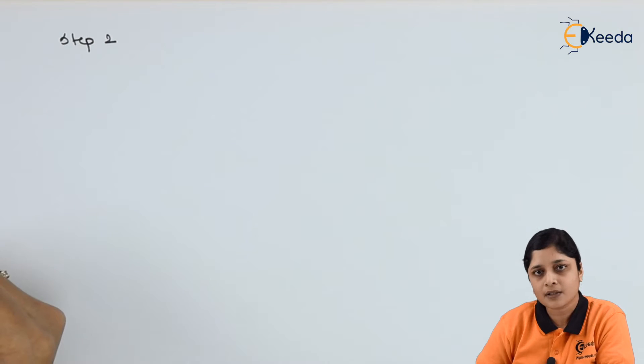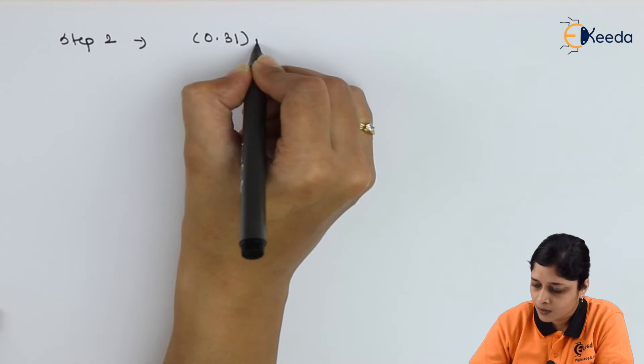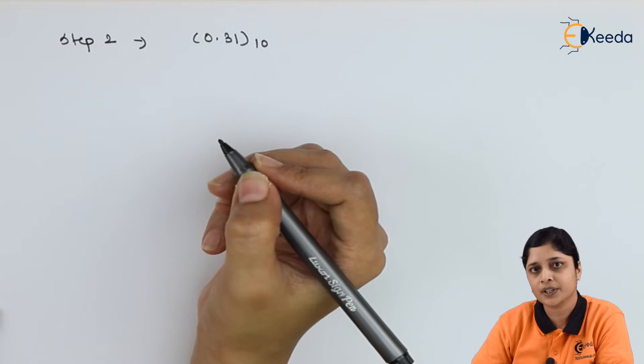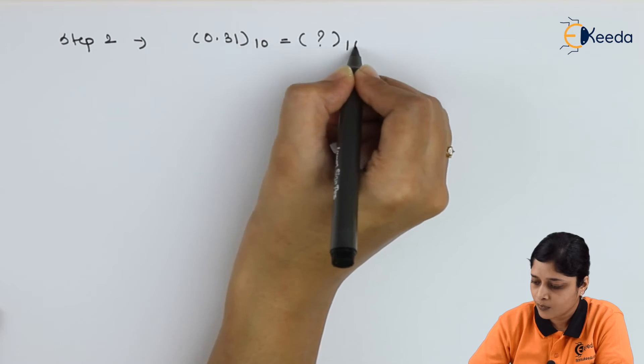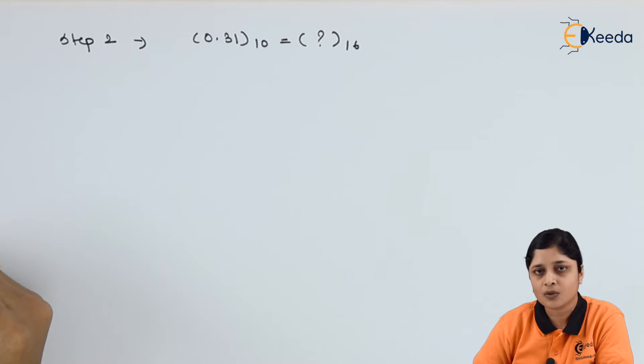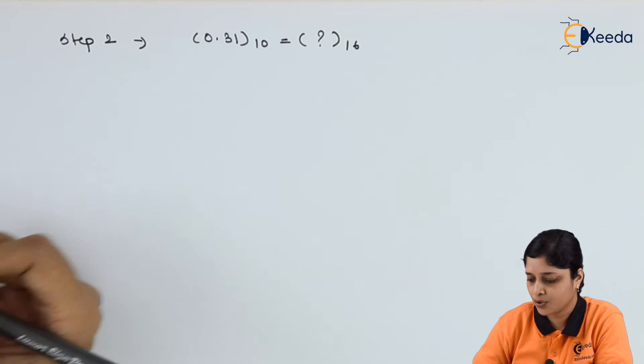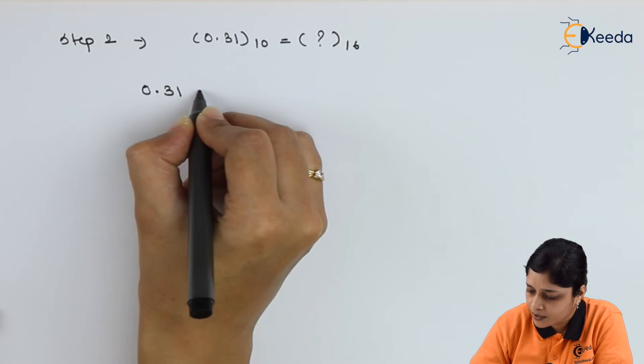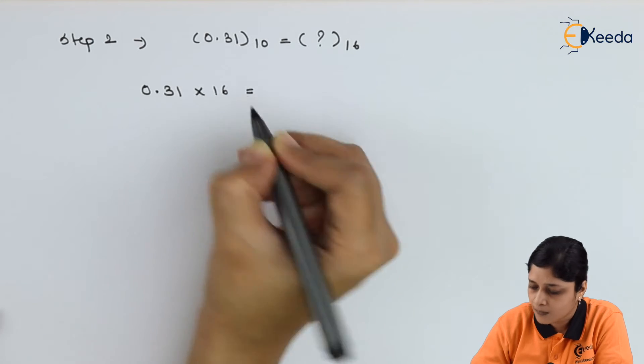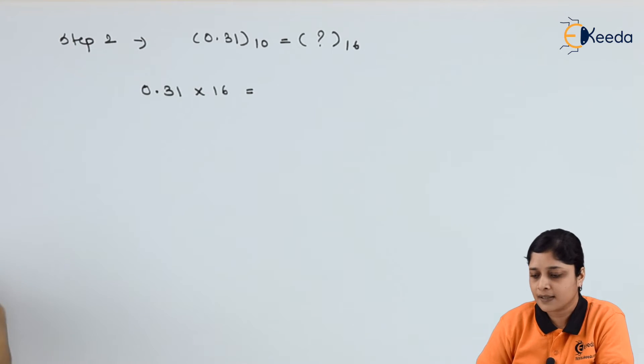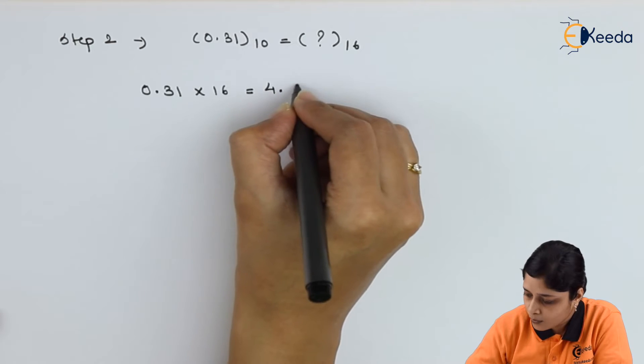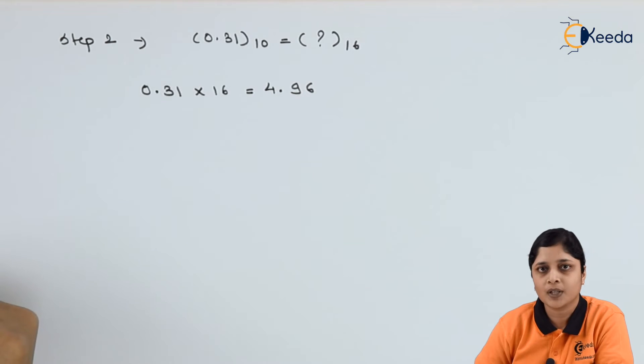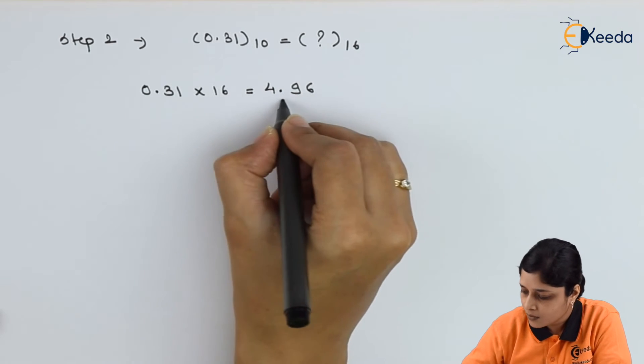Take 0.31 to the base 10 and convert it into hexadecimal. So here we will apply successive multiplication approach. For that, you have to write down 0.31 into 16. Write down the answer 4.96 you will get. You have to take 0.96 here, multiply by 16, and take 4 as is.